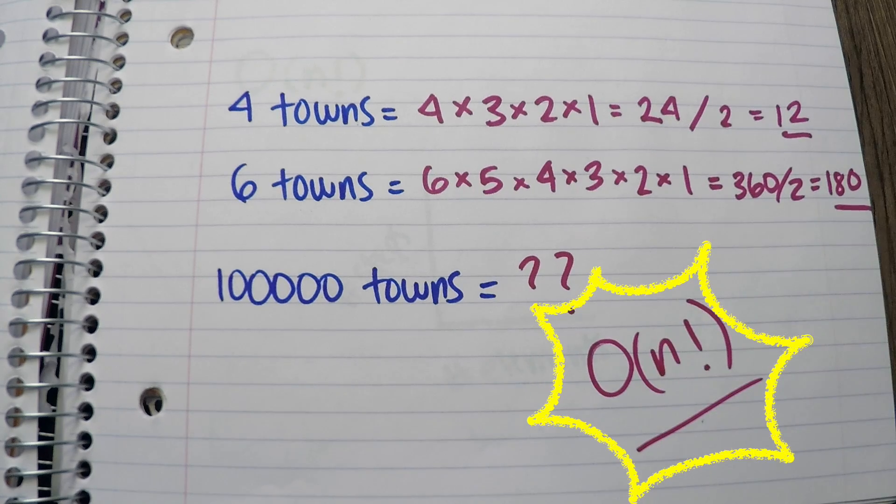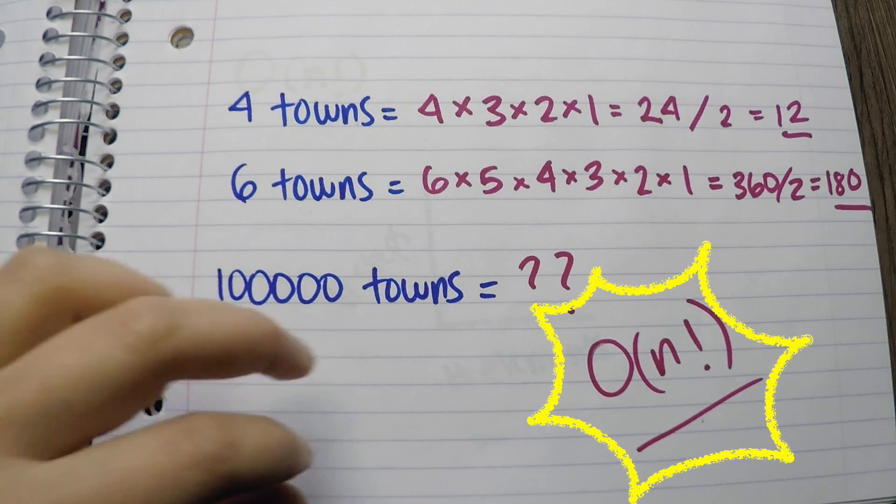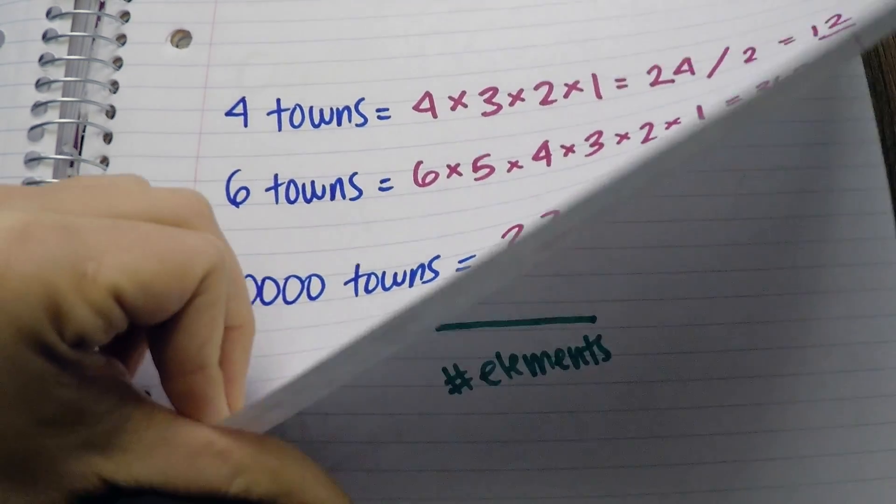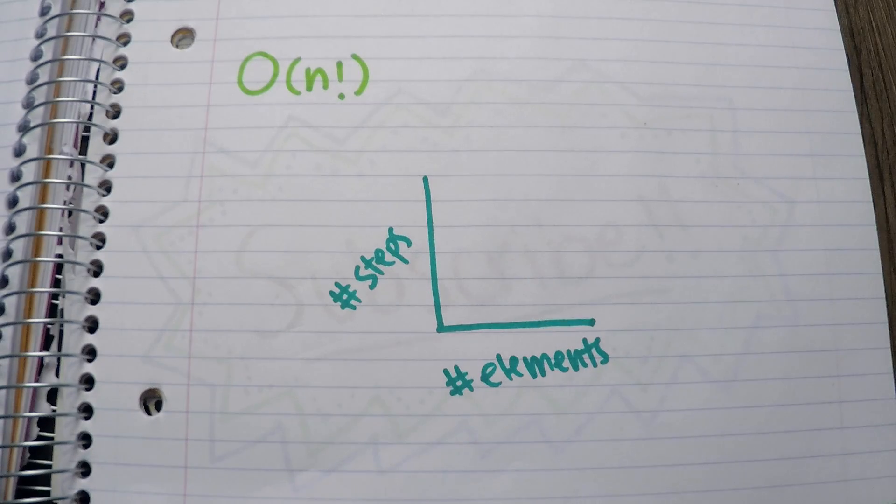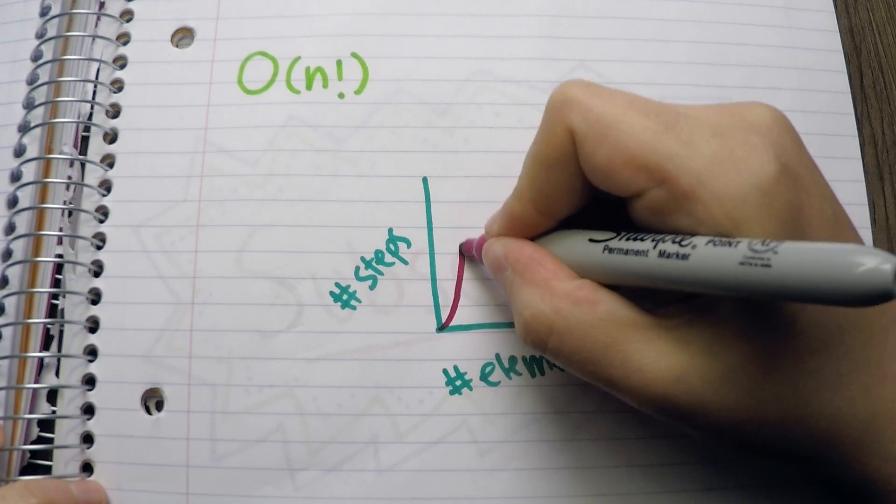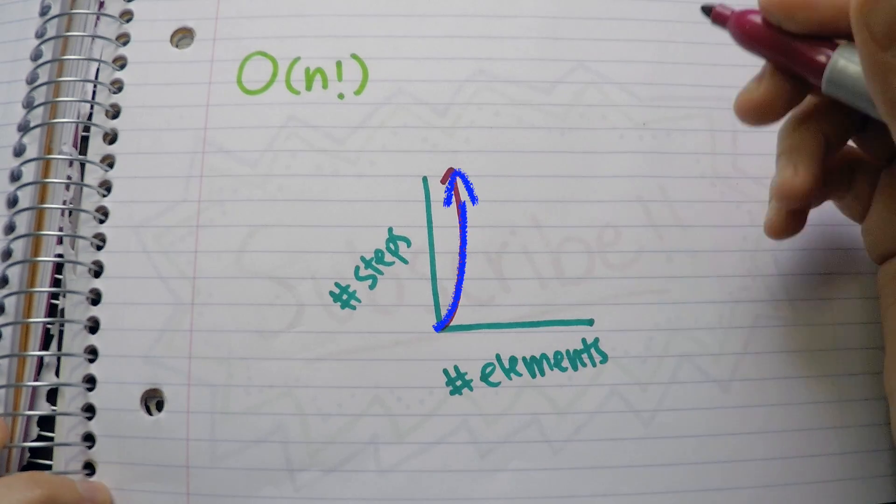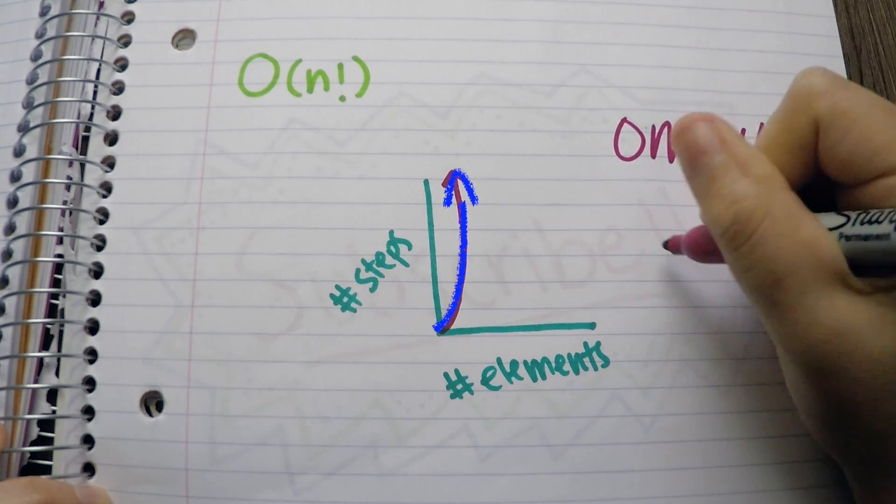If you brute force this problem, you will end up with a rapid growth of calculations and have a complexity of O(n factorial). The number of calculations or steps increase so fast for O(n factorial), you would definitely need to optimize your algorithm.